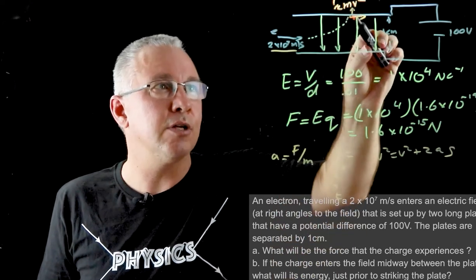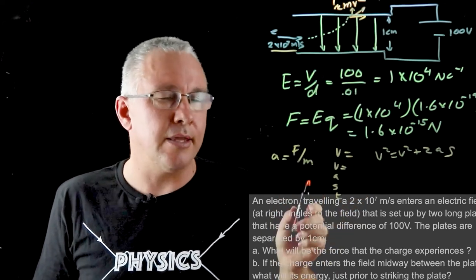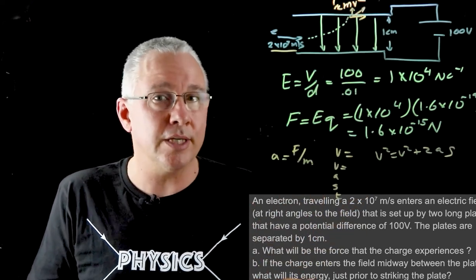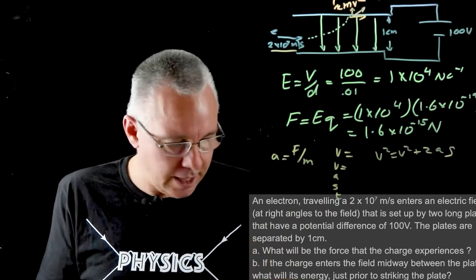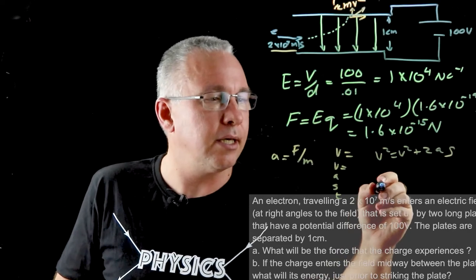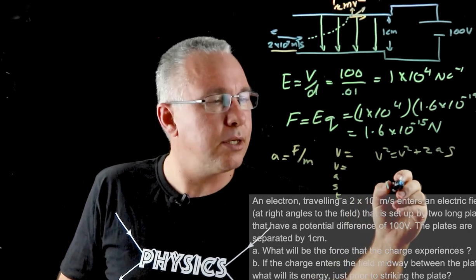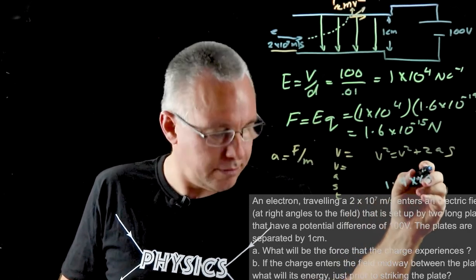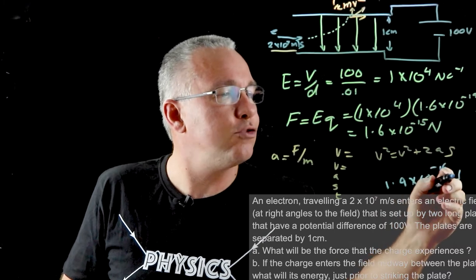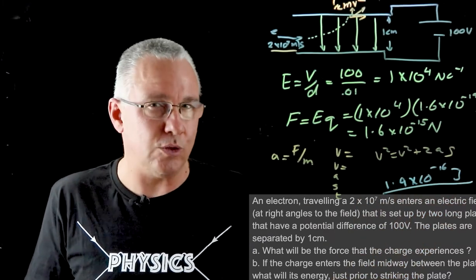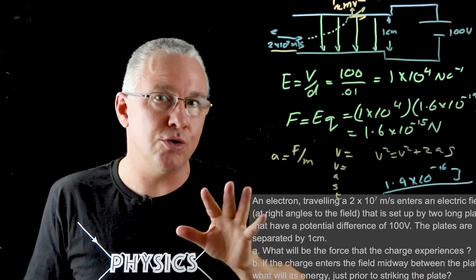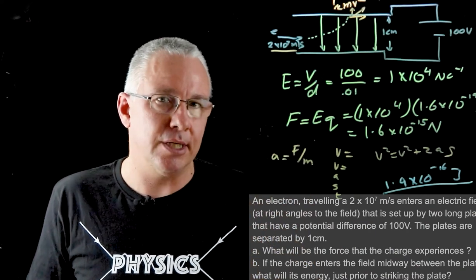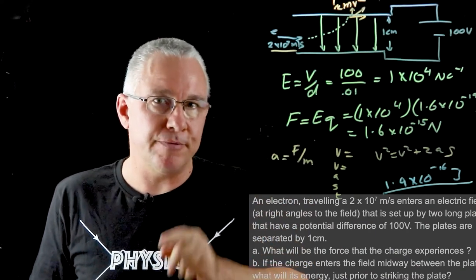Then because this is a lovely right angle here you can work out the net velocity in this direction and then using half mv squared you can work out what the total kinetic energy is. And I will tell you that the value ends up being equal to 1.9 by 10 to the power of negative 16 joules. So that's your final answer that you should be getting. In any case, hope that's helped you understand your motion of charges in electric fields and keep watching my videos. Bye for now.